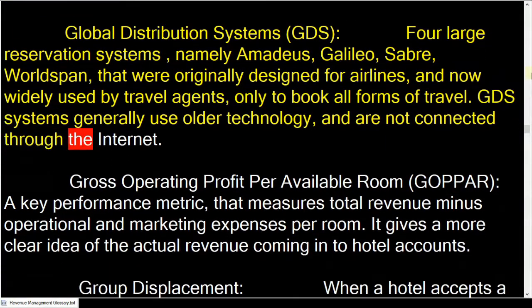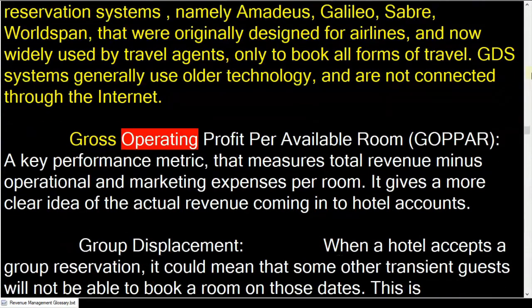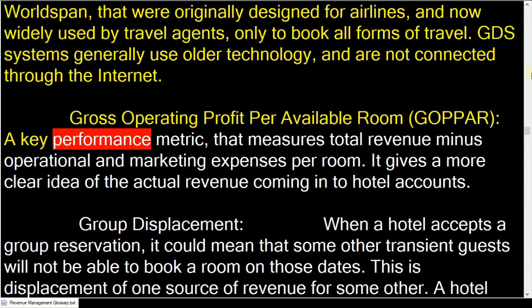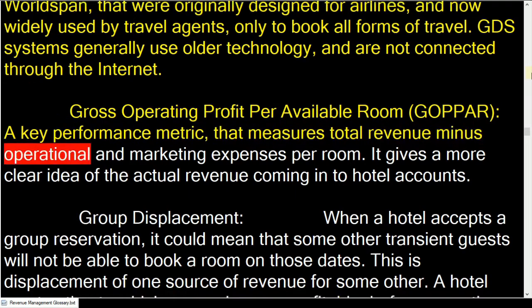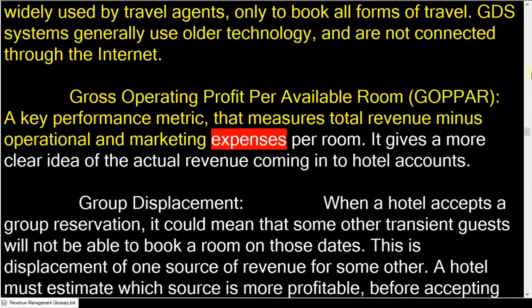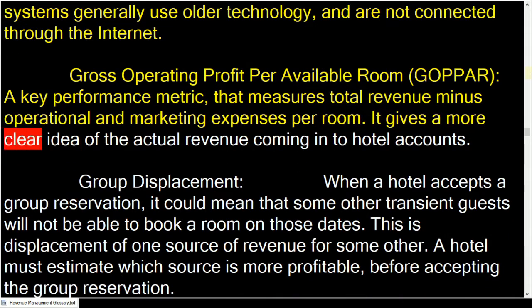Gross operating profit per available room: a key performance metric that measures total revenue minus operational and marketing expenses per room. It gives a more clear idea of the actual revenue coming into hotel accounts.